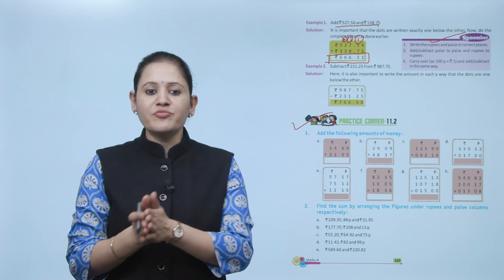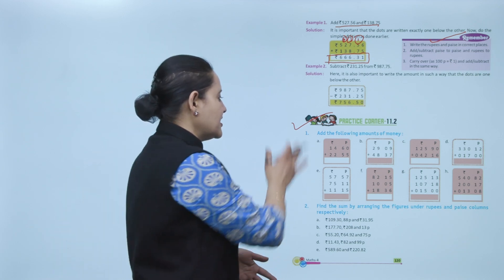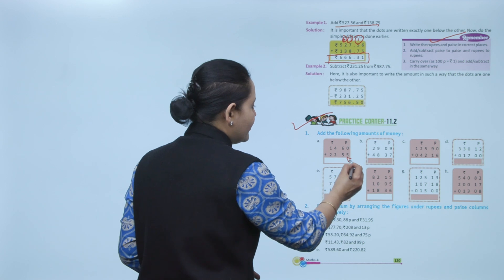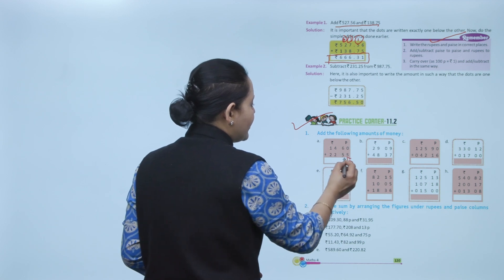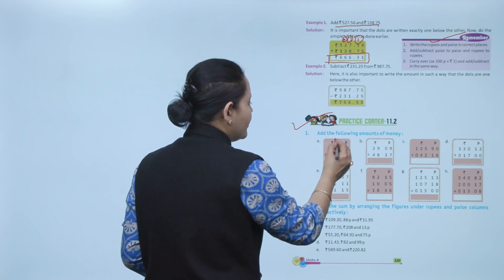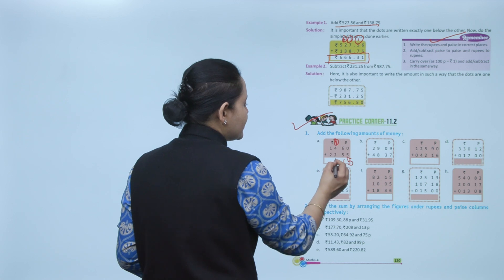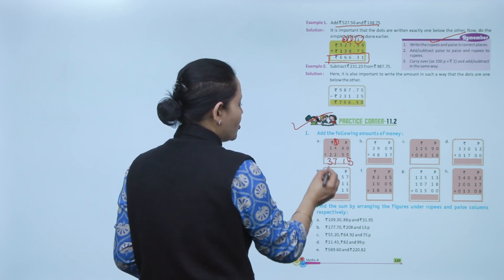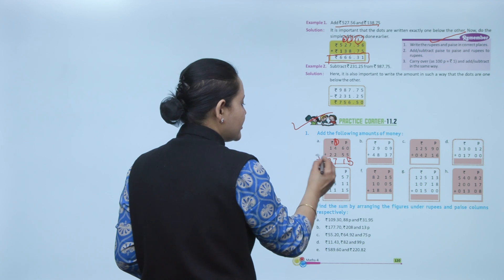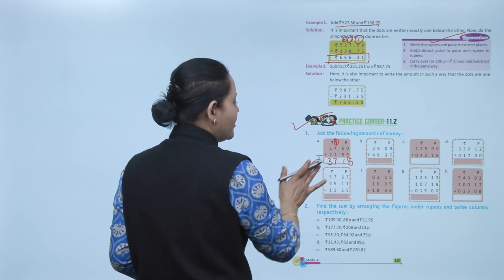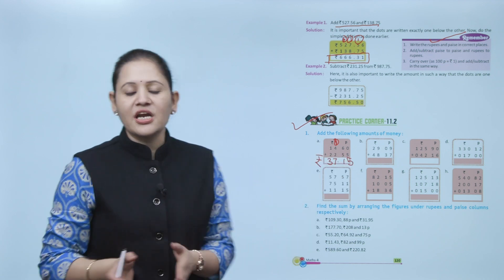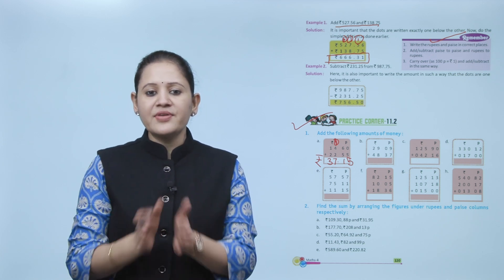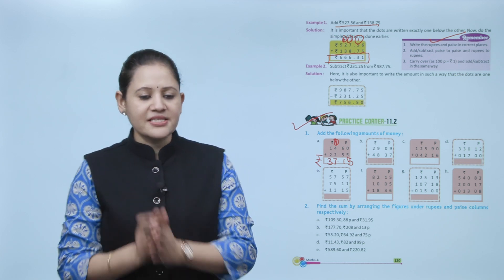Add the following amounts of money. Starting from paisa: 5 plus 0 is 5; then 6 plus 5 is 11, write 1 carry 1; 4 plus 2 plus 1 is 7; 2 plus 1 is 3. Total is rupees 37.15. This is how we add rupees and paisa.